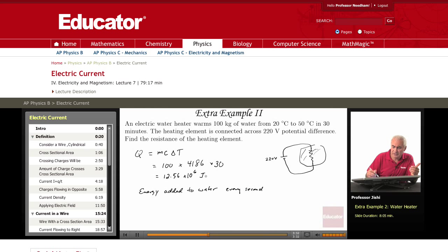This is a total energy added, it's 12.56 times 10 to the 6, that's the total energy added divided by the time. The time is 30 minutes, so 30 times 60 seconds. That's in joules per second. 30 times 60 is 1,800. So that gives us 10 to the 4, and 12 over 18 is about 2 thirds. So we have about 0.7 times 10 to the 4, so that's about 7,000, about that, joules per second.